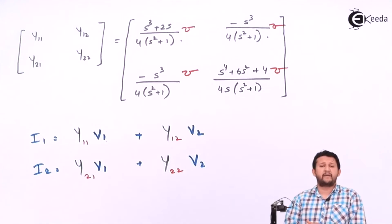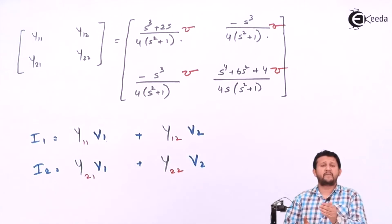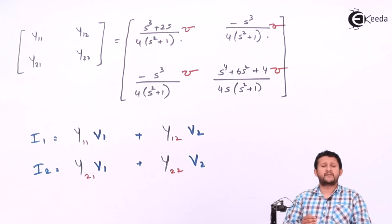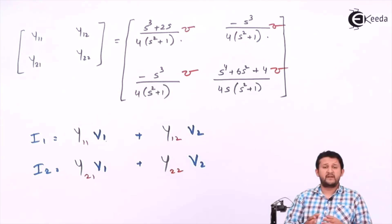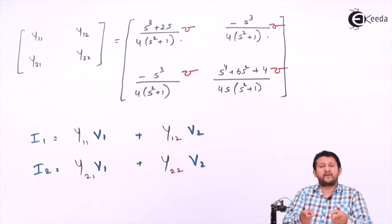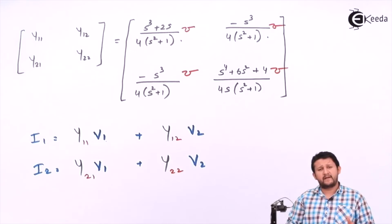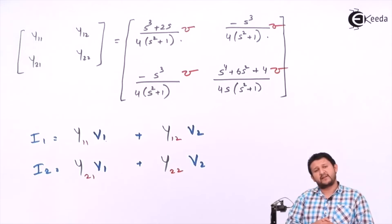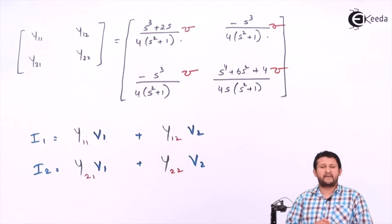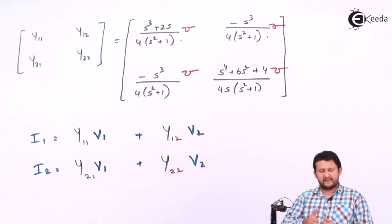Now let's move on to Type 4, which is hybrid parameters. Your hybrid parameters are about 90% similar to Y parameters, which means you also apply KCL for hybrid. I will take the same circuit and we'll see what happens with hybrid parameters. Thank you so much, signing off.